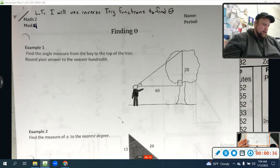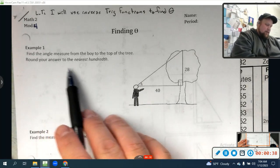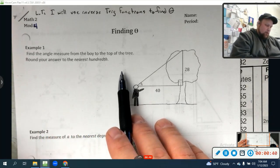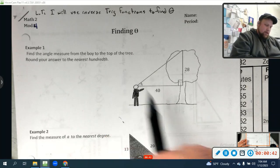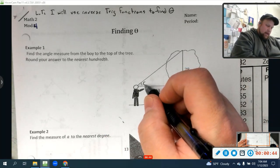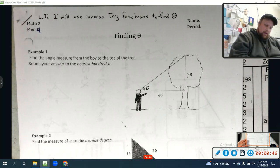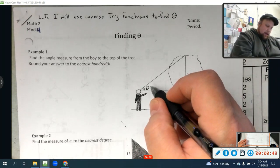And that's where the inverse sine, inverse cosine, comes in. So find the angle measured from the boy at the top of the tree. Round your answer to the nearest hundredth. Well, I want to know what this angle theta is. And we're just going to call it x.